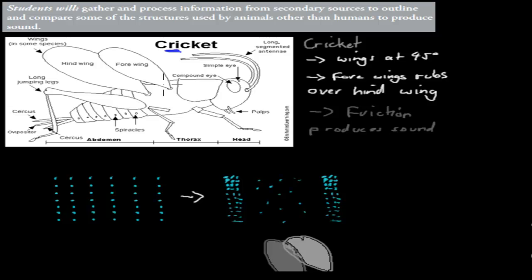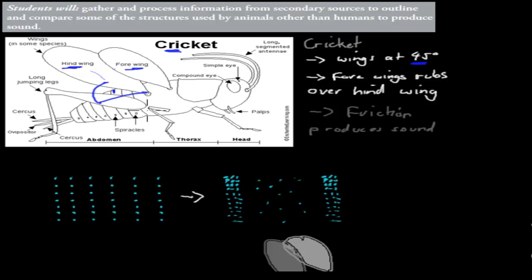Crickets have a distinct sound — you often hear them in the dark. They make the sound using their wings. They have four wings: the fore wing (front) and the hind wing (back). They position their wings at a 45 degree angle, and then they rub the fore wing over the hind wing. These two wings rub against each other.